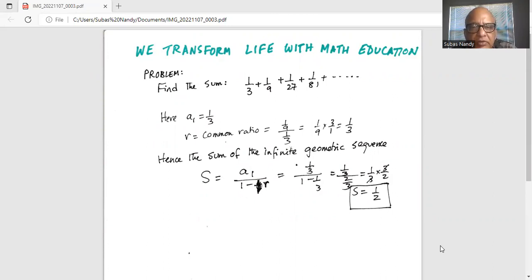So a1 is 1/3, that's the first term. R, the common ratio, is the second term divided by the first term, which is 1/9 divided by 1/3, which equals 1/9 multiplied by 3/1, which is 1/3.